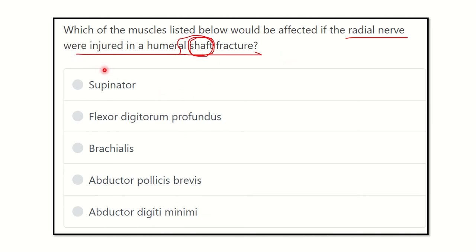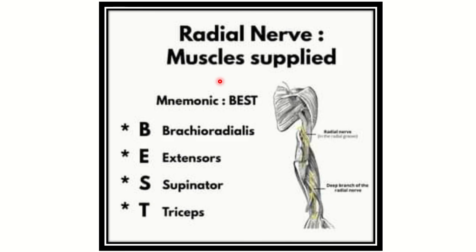First, we have to consider the position of the radial nerve at the shaft of the humerus. The radial nerve supplies muscles remembered by the mnemonic BEST: B for brachioradialis, E for extensors — all the extensor muscles of the upper limb, including arm, forearm, and hand — S for supinator, T for triceps.